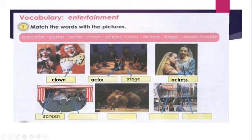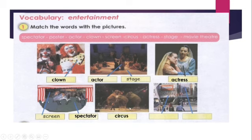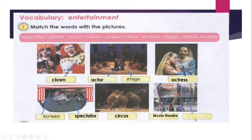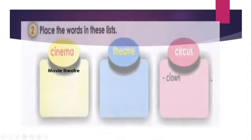In a cinema or in the theatre, what do we call these people watching? Look at the word — spectator, so spectators. Now what do we find — elephants, lions, tigers, clowns — what do we call this place? Circus. This place we can call cinema, but we have another word: movie theatre. Movie is related to films, and theatre is the place where we watch films. And this one is a big picture telling us information about a film — it's a poster.